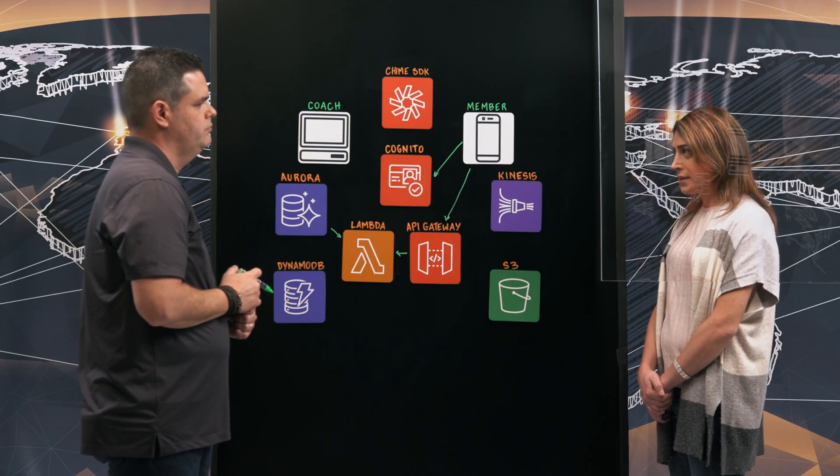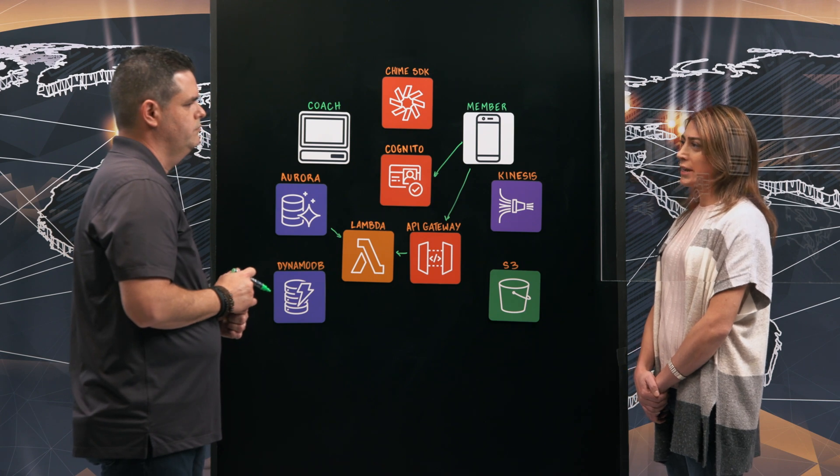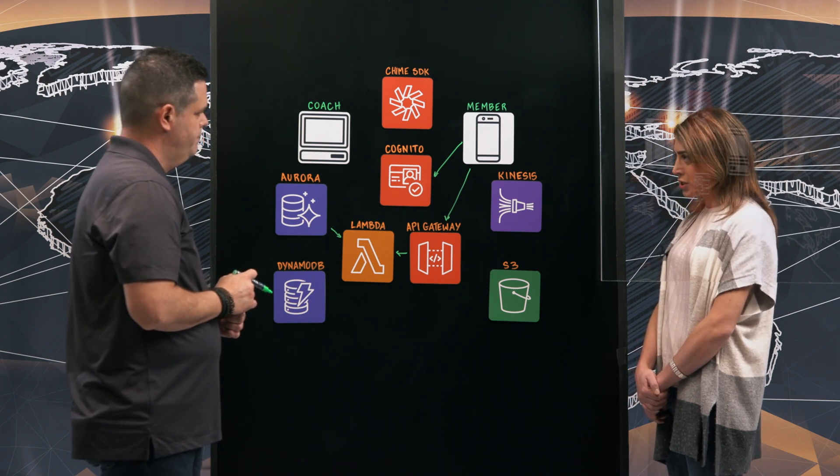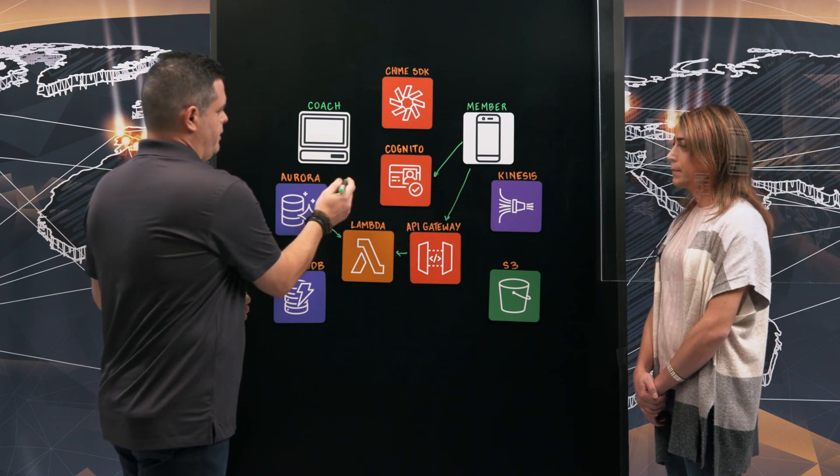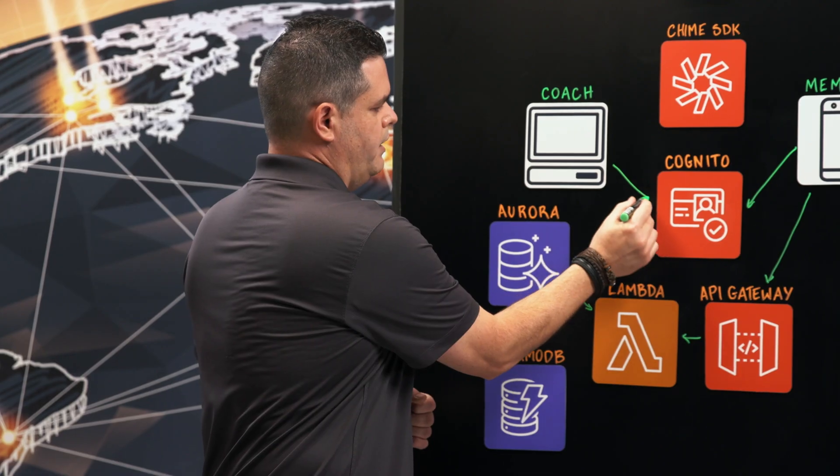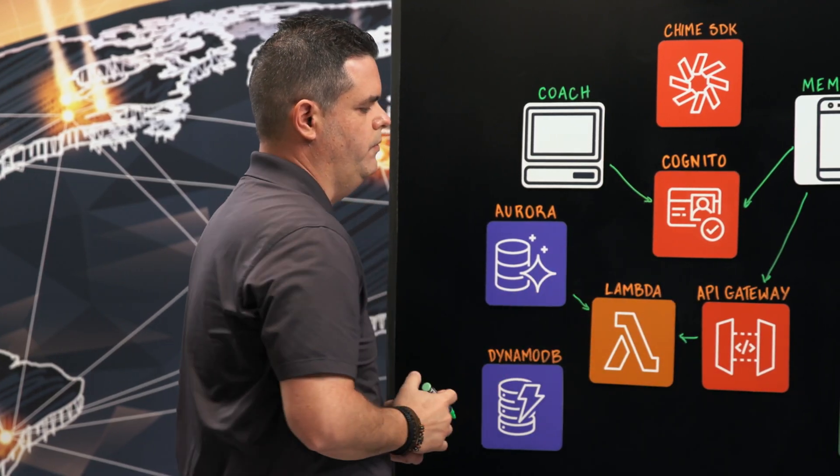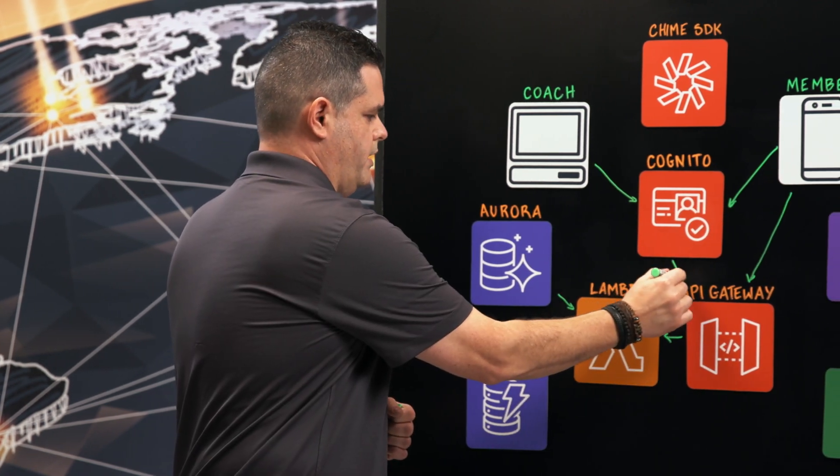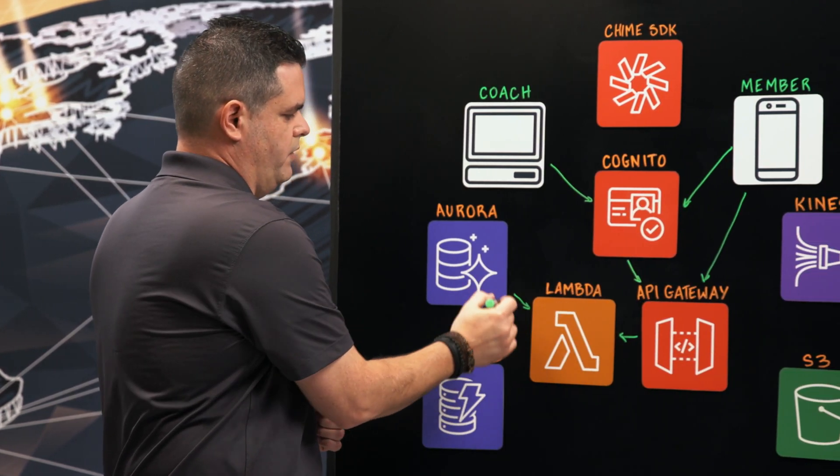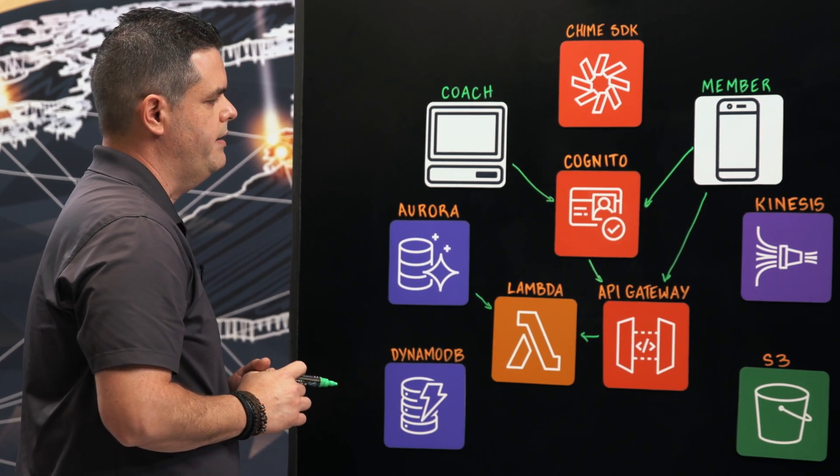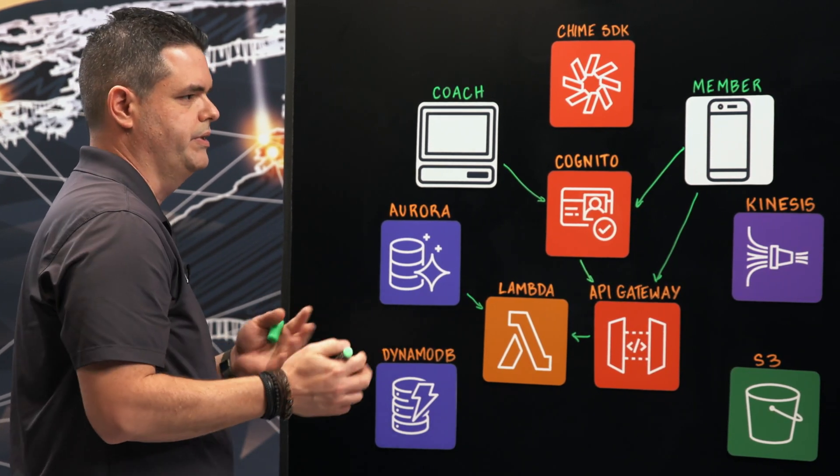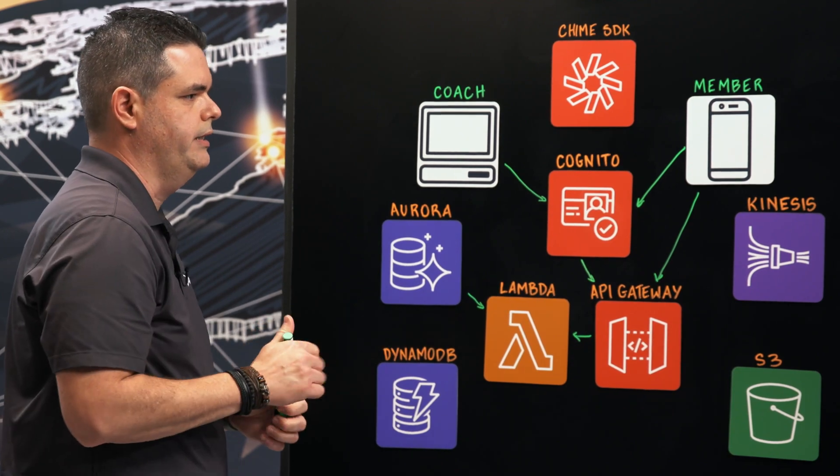So now I'm authenticated. How do I establish connection with the coach? What does the coach need to undergo? The coach follows a similar process. They just have a different link, and they use Cognito again to authenticate, go through API Gateway, and follow the same flow to retrieve class information from Aurora. And they provide a lobby experience for our members until the class has started.